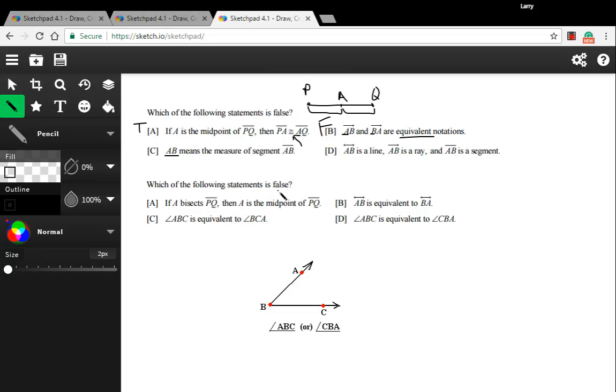All right, last one. Again, we're supposed to say which one is false. The first one says if A bisects PQ, just like what we have up here, then A is the midpoint of PQ. And that's true. It cuts it in half, so it is the midpoint. And then it says line AB is equivalent to line BA. That's true. With lines, it doesn't matter. So these first two are true.